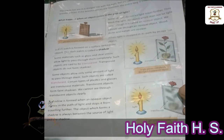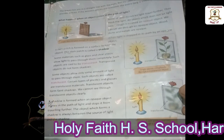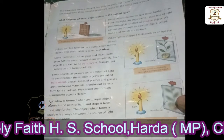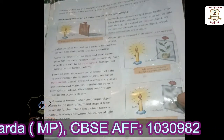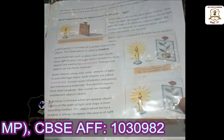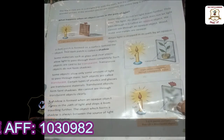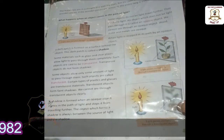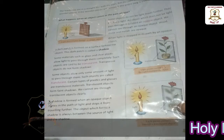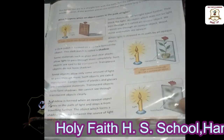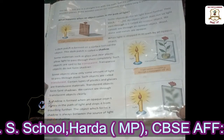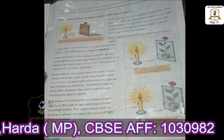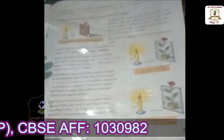We can read the book through this clear plastic — it allows light to pass through it completely. These types of objects are called transparent objects. Transparent objects do not form shadows. Clear plastic and clear glass are examples of transparent objects.